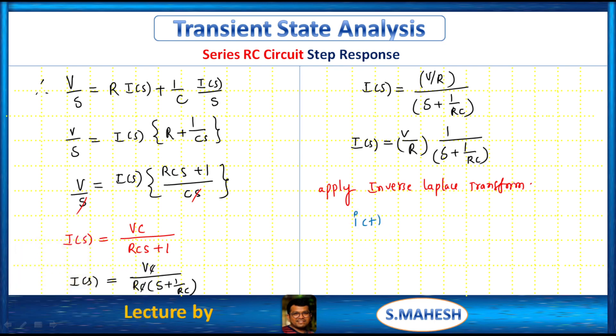Therefore I of s should be equals to I of t. V by R is constant but coming to 1 by s plus A, which is e power minus A T. That is minus A is 1 by R C into T. We know that Tau which equals R C, time constant.